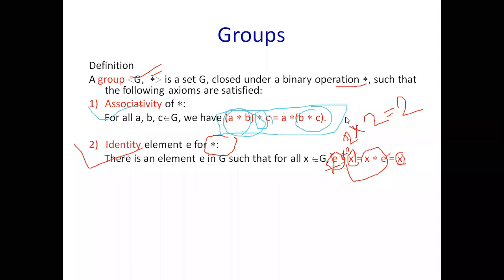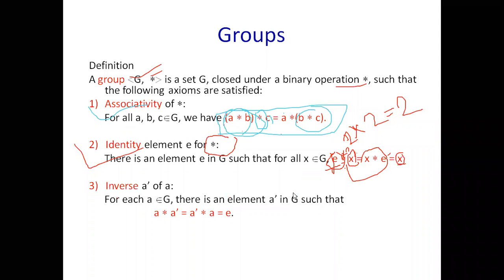Third property: Inverse a' of a. For each a belongs to G, there is an element a' (a dash) in G such that a * a' is equal to a' * a is equal to e.